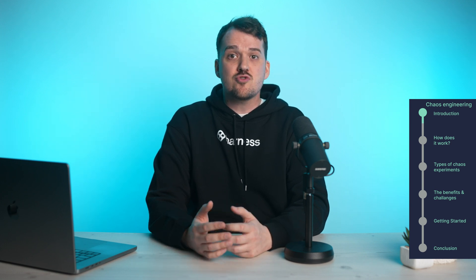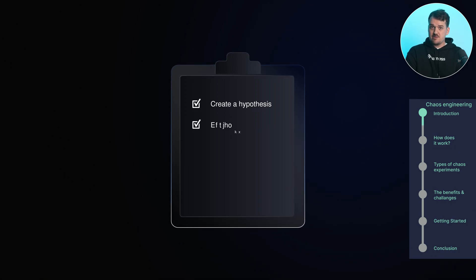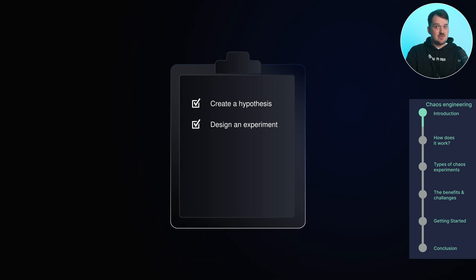But here's the kicker — it's not just about randomly causing chaos. Chaos engineering follows a structured scientific approach. First, you create hypotheses about how the system should react to inevitable failures. Then you run controlled experiments to test these hypotheses, starting with smaller, manageable failures and gradually increasing the severity.